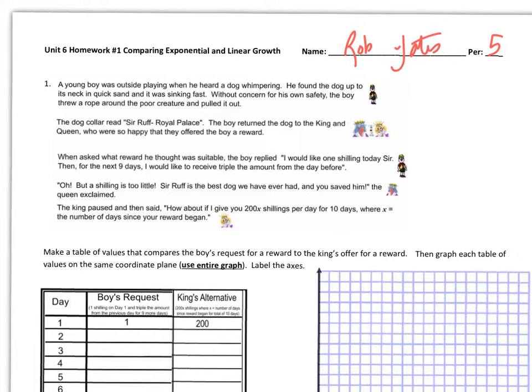When asked what reward he thought was suitable, the boy replied, I would like one shilling today, sir, and then for the next nine days I would like to receive triple the amount for the day before. Oh, but a shilling is too little. Sir Ruff is the best dog we have ever had and you saved him, the queen exclaimed. And the queen paused and then said, how about if I give you 200 shillings per day for 10 days? Where X is the number of days since your reward began.